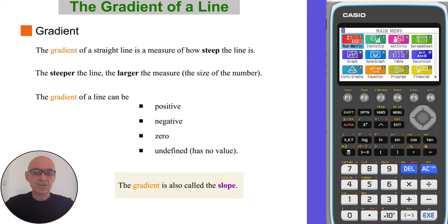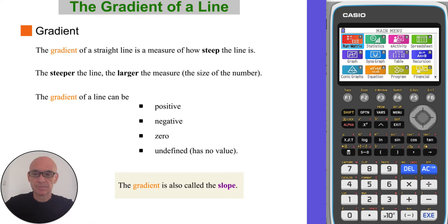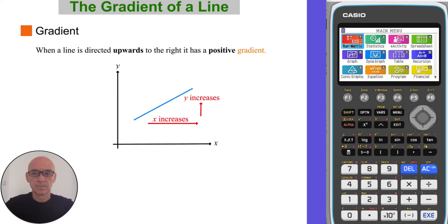The gradient of a line can either be positive, negative, zero, or undefined. When a line is directed upwards to the right, it has a positive gradient. We say, as x increases, y increases.